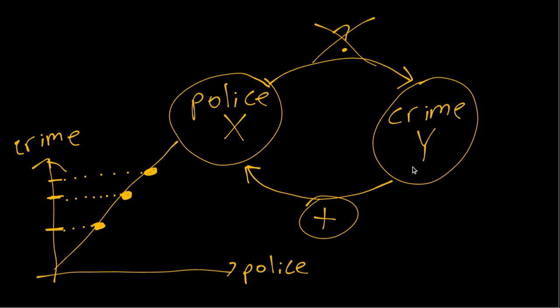When in fact that's due to this reverse causality, the fact that the crime rate then has a causal effect on decisions about police per capita.